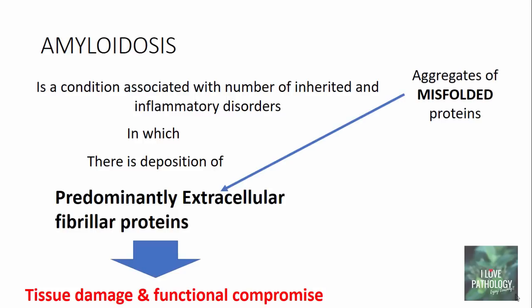These fibrillar proteins are basically aggregates of misfolded proteins. Proteins are made up of chains of amino acids, which fold into three-dimensional structures — folding is very important for protein function. Sometimes after the formation of proteins, some folds may release, resulting in abnormal or misfolded proteins. When this occurs, the normal function of the protein is lost. Apart from that, the most important thing is that misfolded proteins are insoluble, and because they are insoluble they get deposited in the tissues.